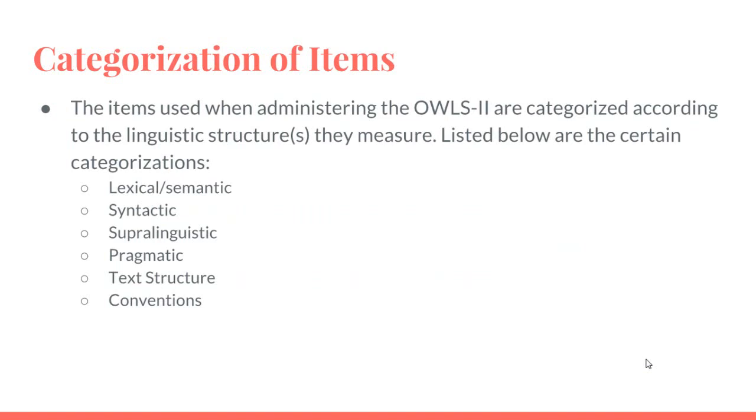The first is lexical and semantic. This consists of nouns, verbs, modifiers, idioms, prefixes, and suffixes. The next is syntactic: grammatical morphemes.